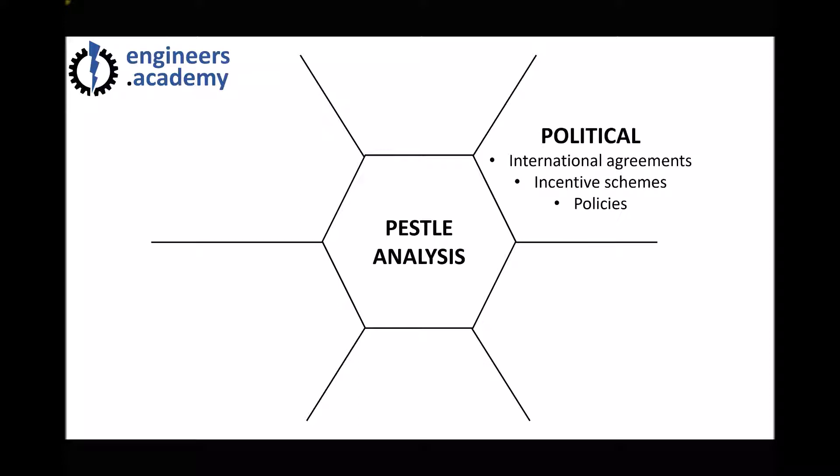The P in PESL stands for political. When you conduct a PESL analysis, it's important to consider all of the political factors that can potentially affect your project. You might look at international agreements — the Kyoto Protocol as an example. You might look at different incentive schemes, such as contracts for difference, and different policies and taxes that might impact on your project.